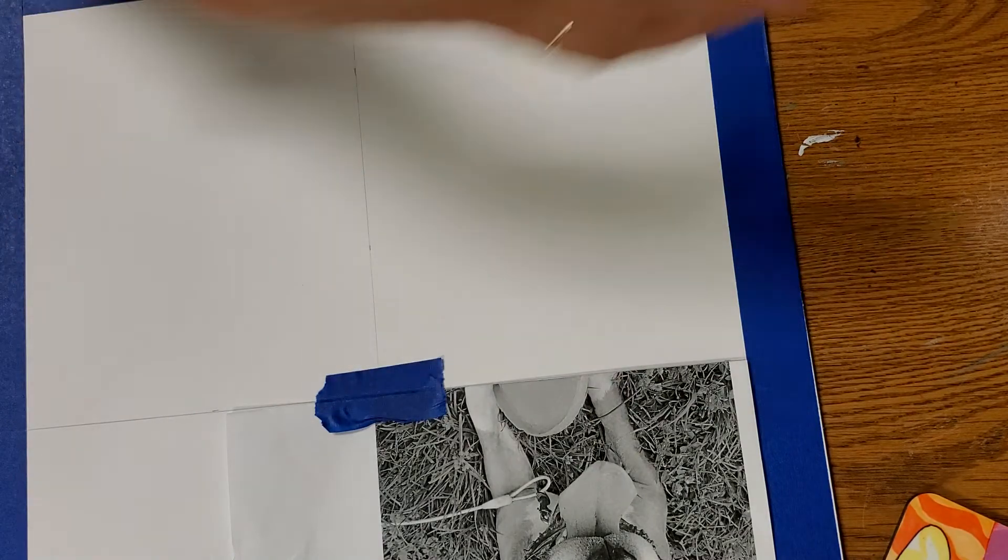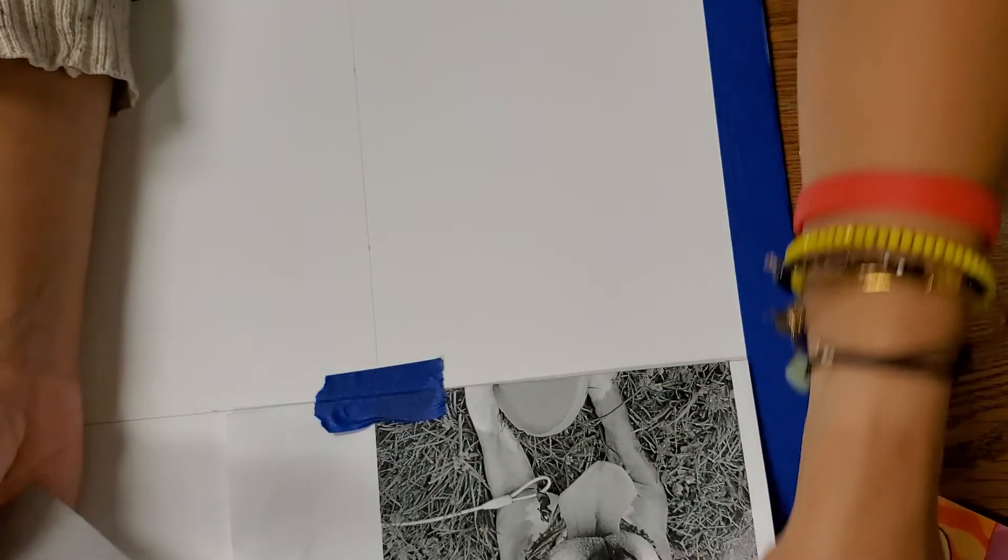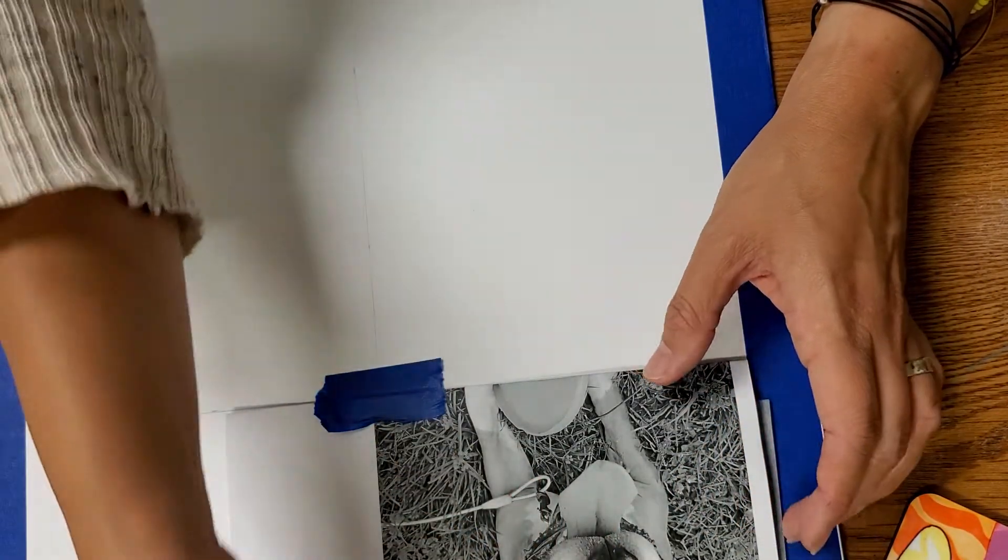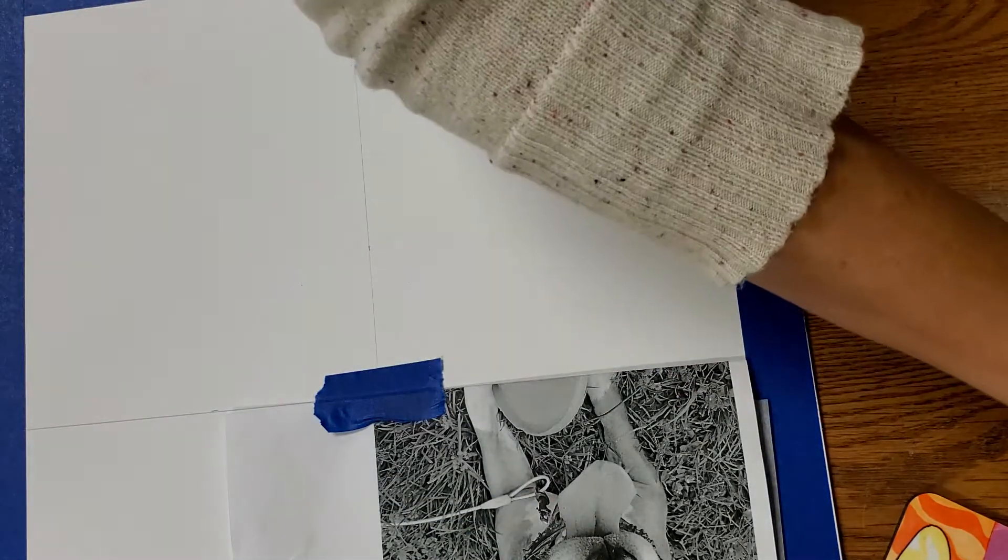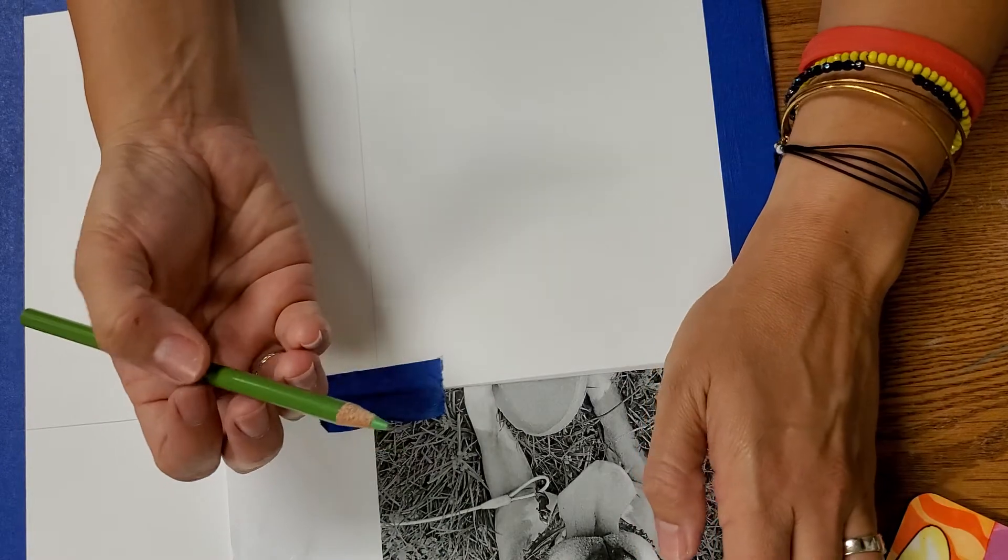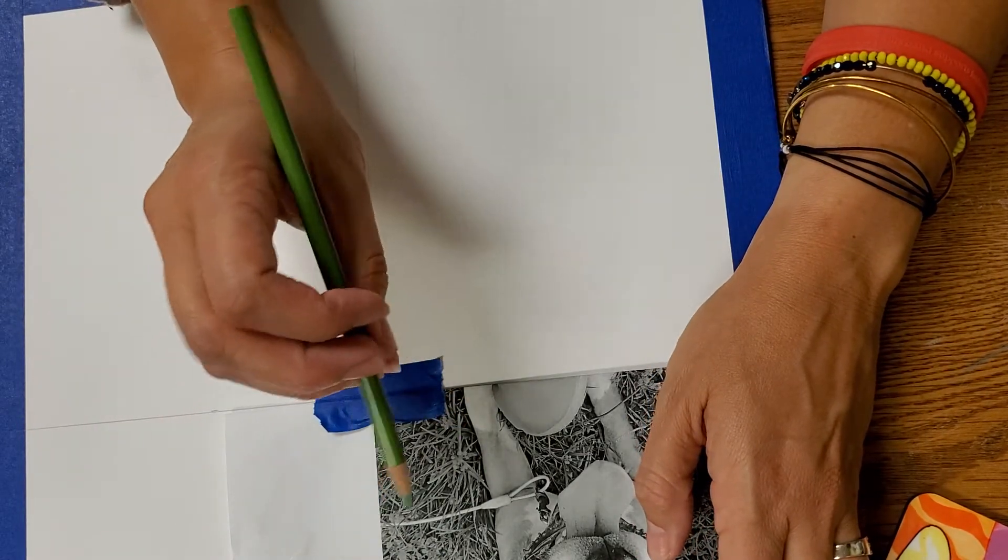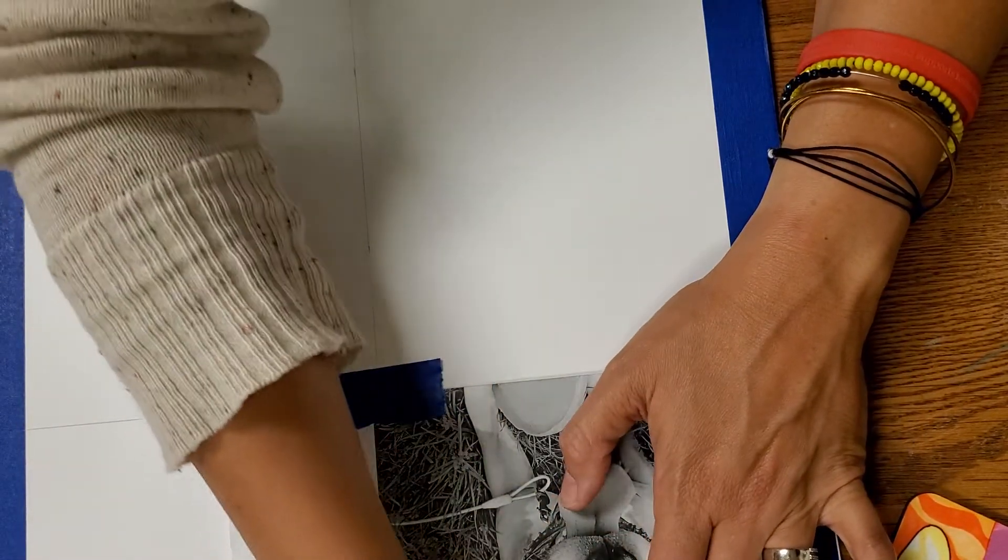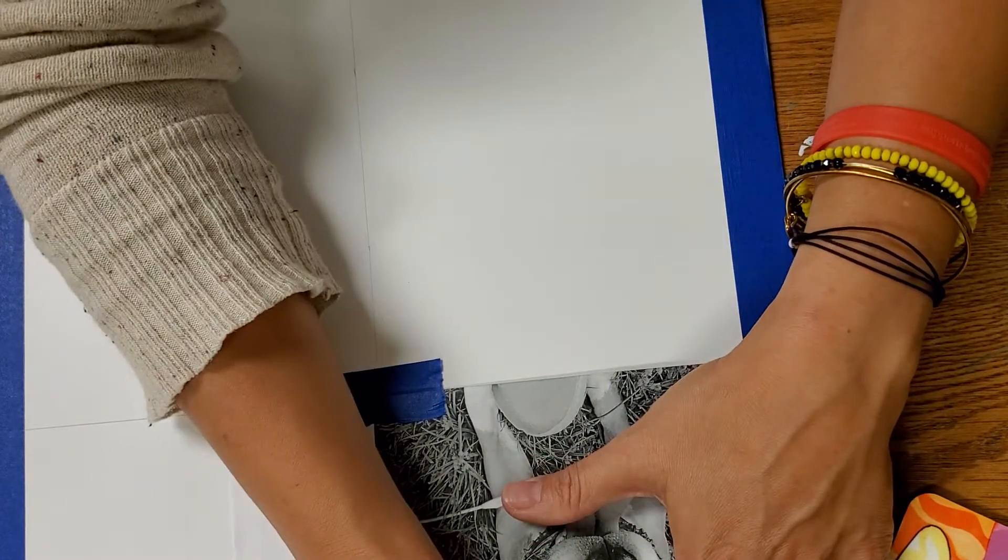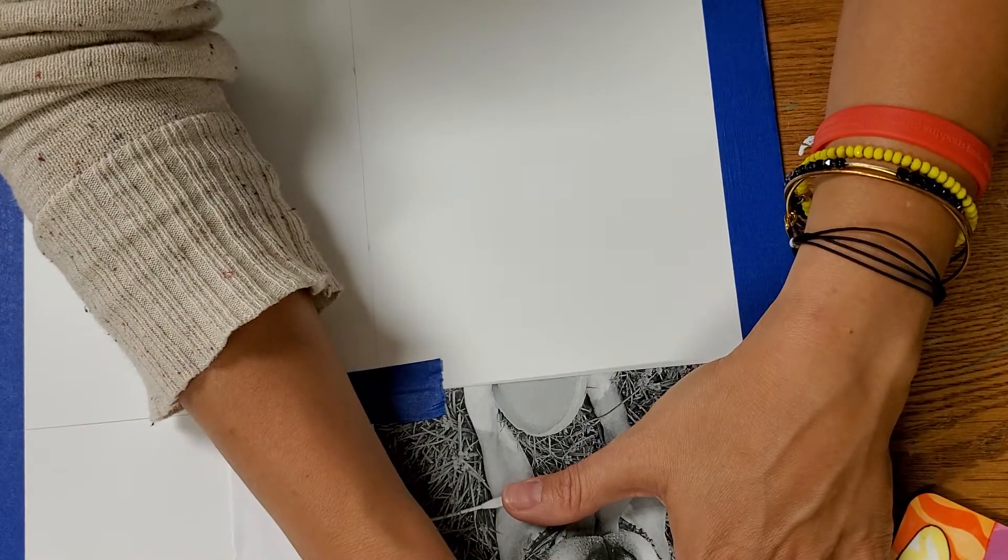And then the same thing. I'm using graphite paper, but if you are not, obviously, if you don't have it, then you should have already colored in the back of your paper with a graphite pencil. Make sure you're using a colored pencil that you can see. So when you are tracing your image into the area, you can see the image.